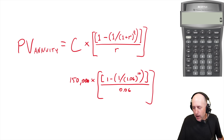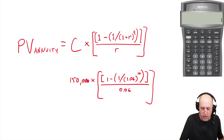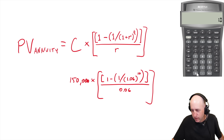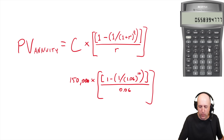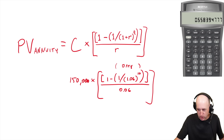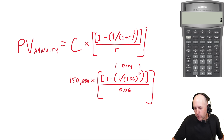Now let's crunch this down in the calculator. Following order of operations, we start with the exponent inside the bracket: 1.06 to the power of 10. Then we take one divided by that number — there's a one-over-x button on the financial calculator. So inside the bracket we now have 0.558. Then one minus that number gives us 0.441, and then we divide by 0.06.